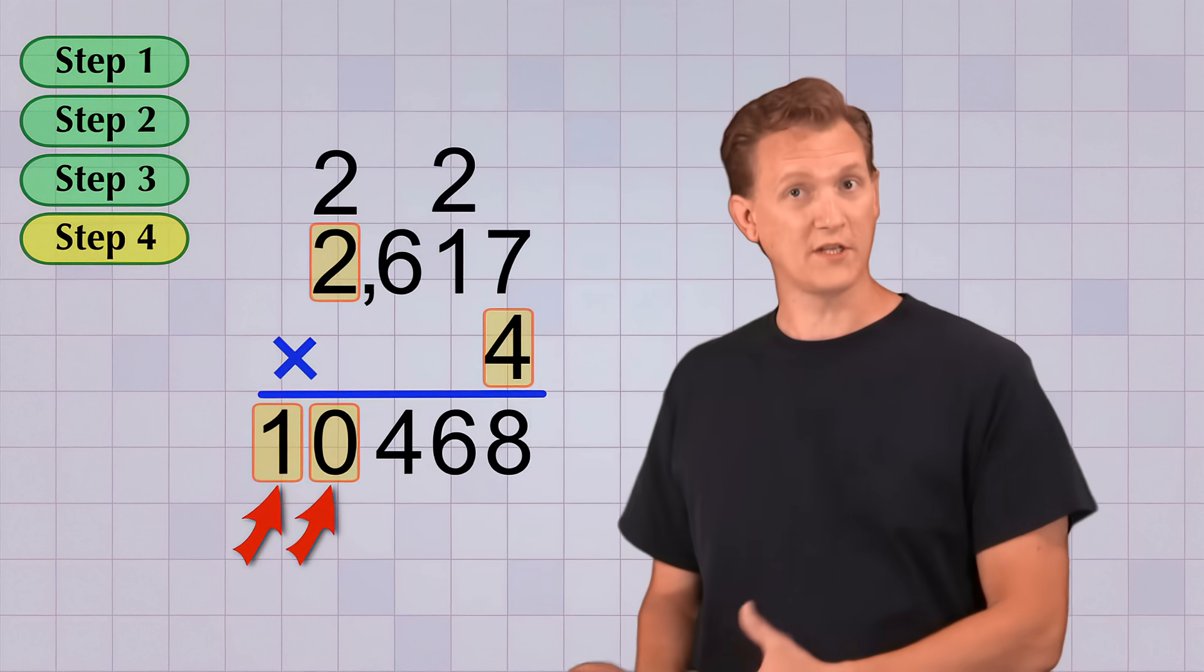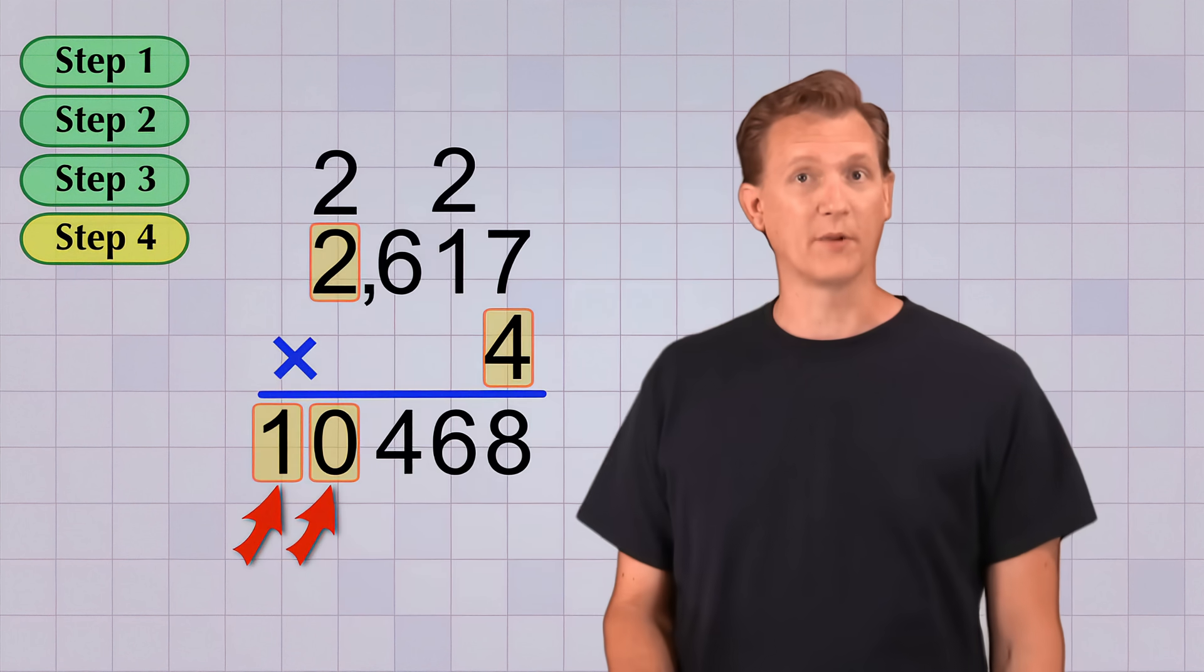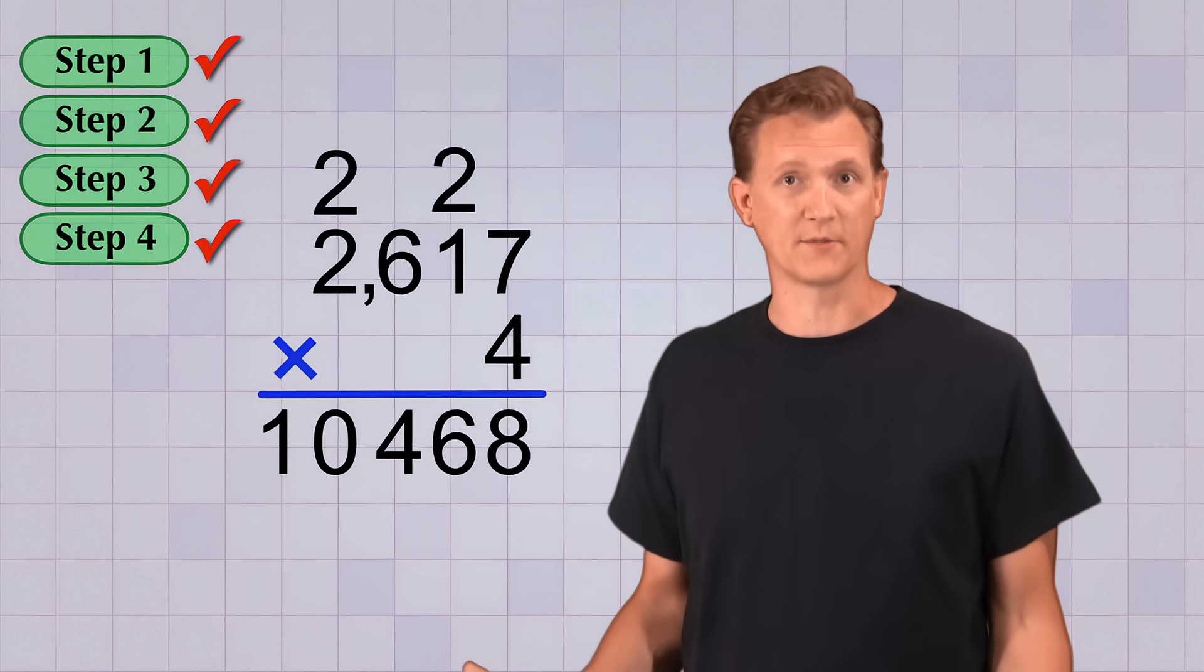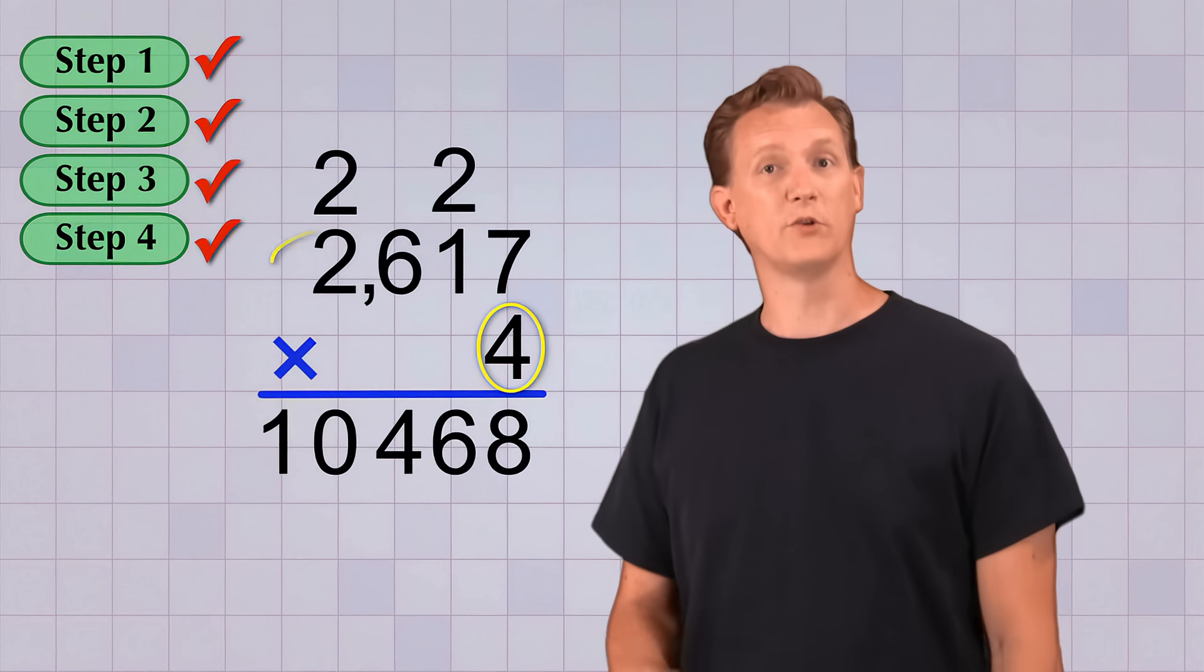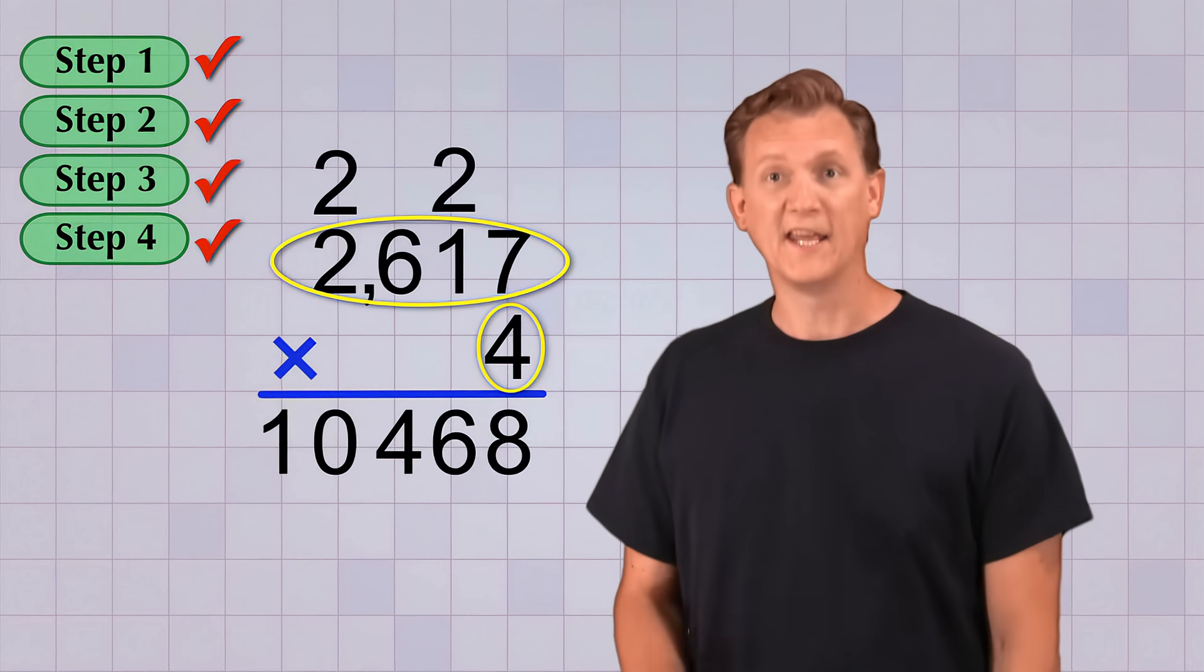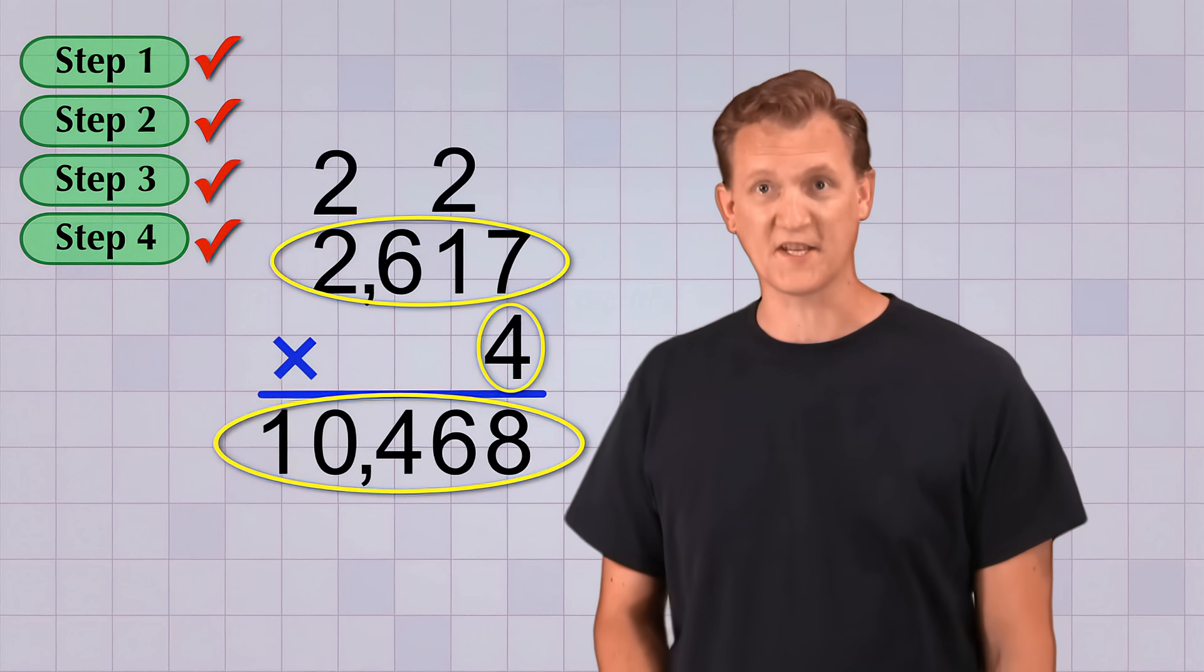Even though it's a two-digit number, we don't have to carry because we're all done with our multiplication steps, and we have our final answer. 4 times 2,617 equals 10,468. That's the basics of multi-digit multiplication, but it's really important to practice so you get good at it. Be sure to do the printable exercises for this section.